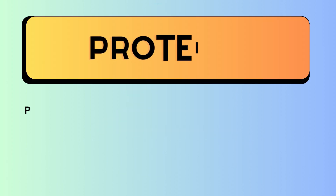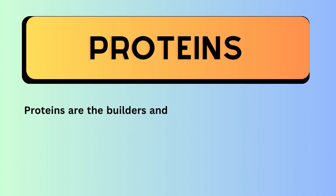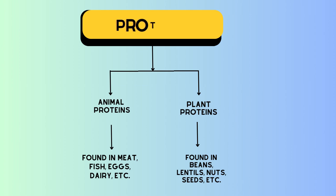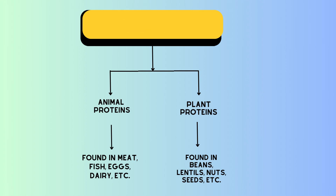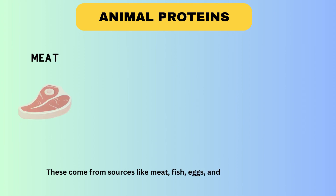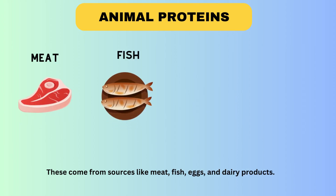Now let's talk about the second component: proteins. Proteins are the builders and repairers of our body — they are like the construction workers of our cells. There are two main sources of proteins. Animal proteins come from sources like meat, fish, eggs, and dairy products.